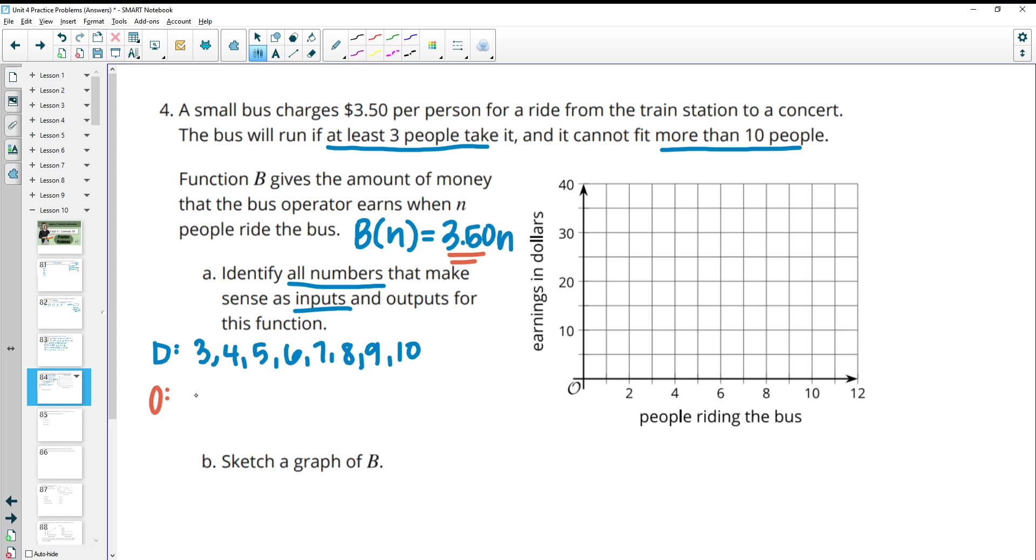Now the outputs here, the range, are going to be when we multiply by 3.50 because that's going to be per person. And you're not going to have any numbers in between that because you can't have partial people. So we would get 10.50 if we do 3 times 3.50, and then we'll just keep adding 3.50s onto this. So I'm just adding 3.50 each time up to 10 people. So 10 times 3.50 is 35, or if we kept adding 3.50 on for each additional person.